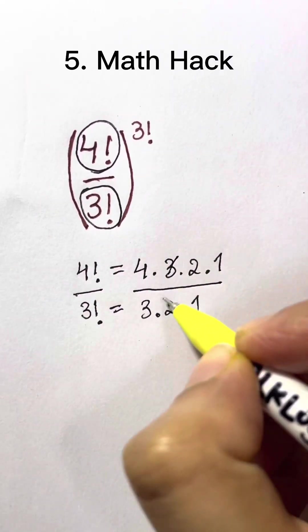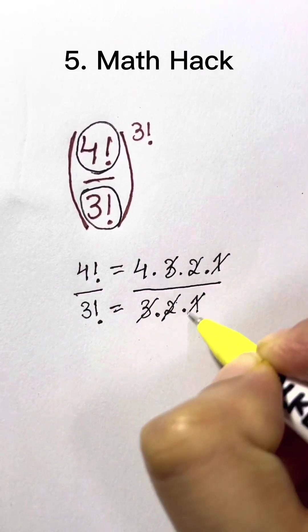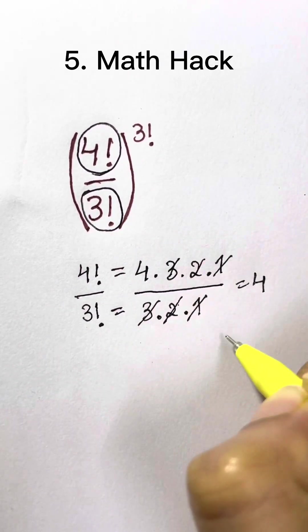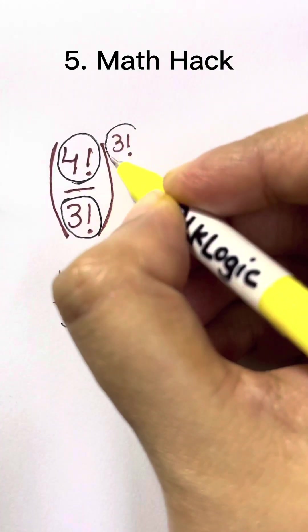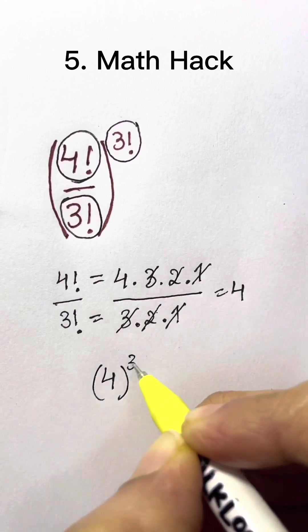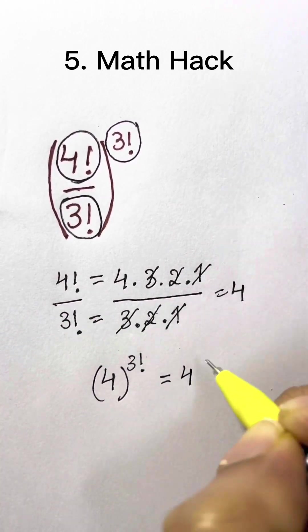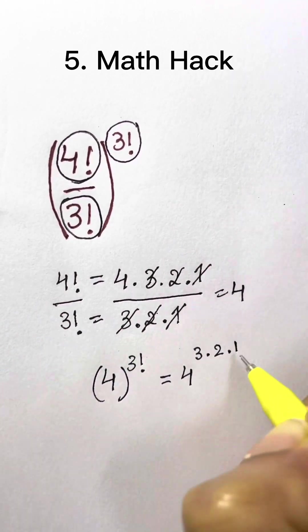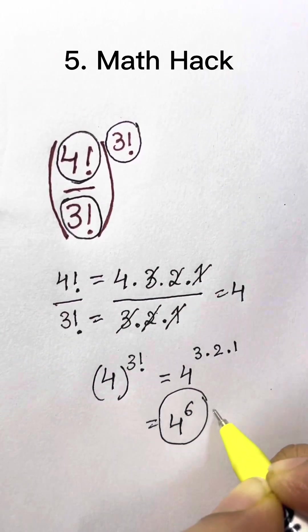It's 4 factorial over 3 factorial. Let's divide both of them. 3 crosses out, 2 crosses out, 1 crosses out. You're left with 4. Now you have this to the 3 factorial. Let's write down 4 to the 3 factorial. That's equal to 4... 3 factorial is 3 times 2 times 1. That's equal to 4 to the 6th. That's your answer.